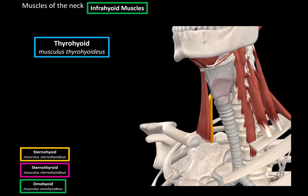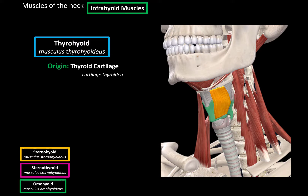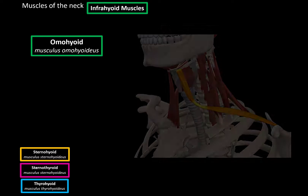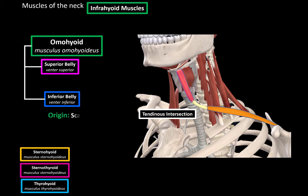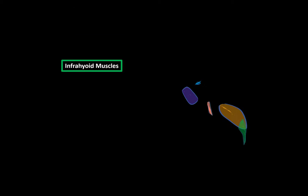Then we have the thyrohyoid muscle, which originates from the thyroid cartilage and inserts at the hyoid bone to fixate it. The last one is the omohyoid muscle — a long muscle connecting the scapula to the hyoid bone. In the middle there's a tendinous intersection dividing it into a superior belly and an inferior belly. It originates from the scapula, passes through the tendinous intersection, and inserts at the hyoid bone to depress it. It may also assist with elevation of the scapula, and the tendinous intersection attaches to the carotid sheath, allowing it to dilate the internal jugular vein.